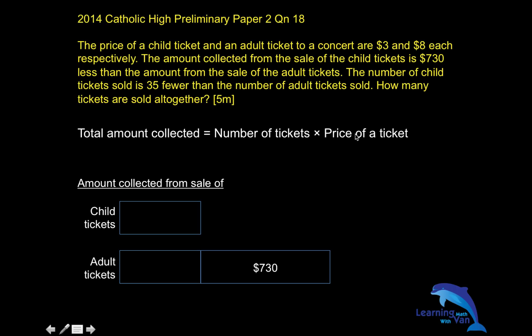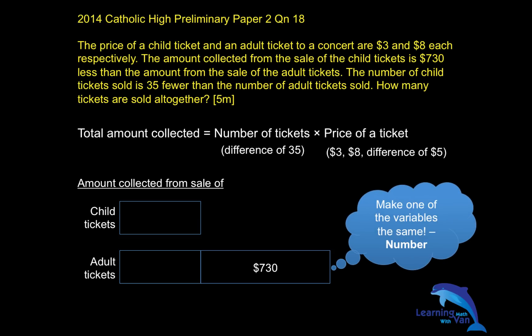Going back to the two variables — is any one of them the same? Number of tickets? No, we are told there were 35 fewer child tickets. Price of the ticket? No, because one is sold at $3 and the other at $8, so there's a difference of $5. Like a science experiment, you make one of the variables the same. You can only make the number the same, because making the price the same would require knowing the number of tickets anyway.